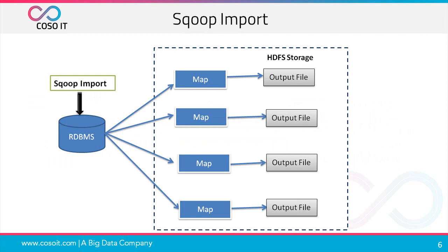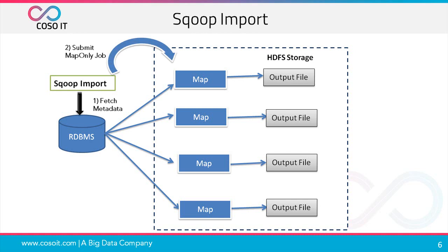But before that, let us see how the Sqoop import command works internally. When a client submits a Sqoop command through the command line interface, the first step is Sqoop gathers the metadata — information about data like number of columns, their names, data types, etc. In the second step, it launches a Hadoop map-only job, and there is no reduce phase. Why is there no reduce phase? Because we are only fetching and loading the data, and there is no aggregation happening here. Sqoop by default creates 4 map tasks and distributes the input data among the mappers equally to get high performance. Then each mapper creates a connection with the database using JDBC and fetches the part of data assigned by Sqoop and writes it to HDFS in the form of output files.